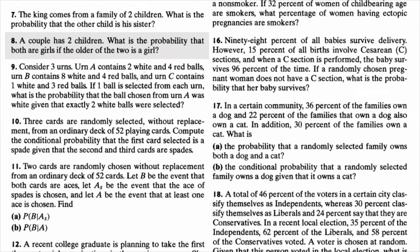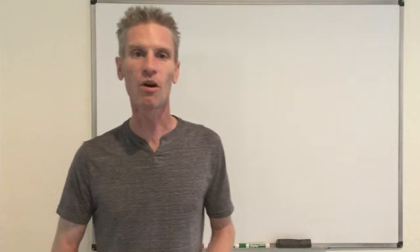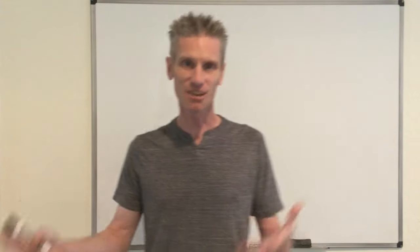So those two problems say the following. Problem 3.8 says that a couple has two children and we want to find the probability that both of the two children are girls, given that the older of the two is a girl. It seems intuitively that the answer should be one half, and indeed it is one half. Now, problem 3.7 says that the king comes from a family with two children. The goal is to find the probability that the other child is his sister. It seems again that the answer should be one half — in fact, it's completely wrong. The answer is not at all one half, which looks a little bit disturbing.